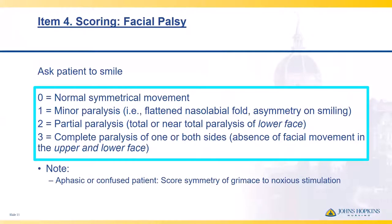The next item is facial palsy. You're simply going to ask the patient to smile and look at the symmetry of the smile both when smiling and at rest. You're looking at their nasolabial fold to see if they can elevate both sides of their mouth equally. Also look at the forehead — ask the patient to lift their eyelids to see wrinkles. A normal symmetrical movement earns zero points. A minor paralysis — flat nasolabial fold or slight asymmetry when smiling — earns one point.